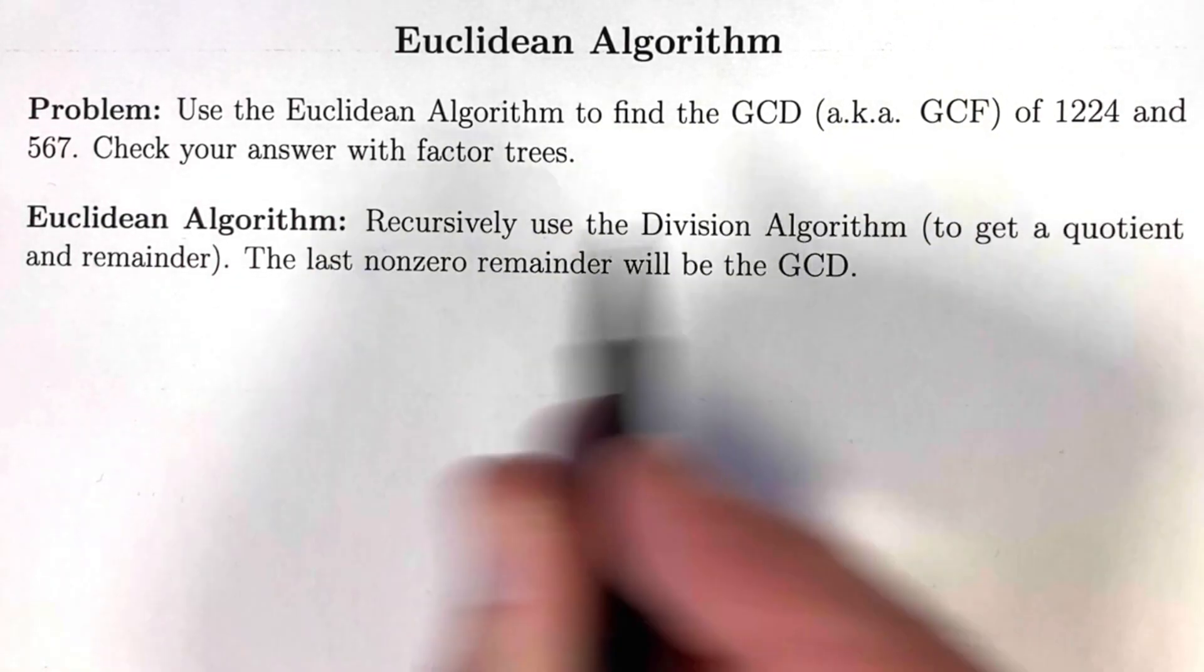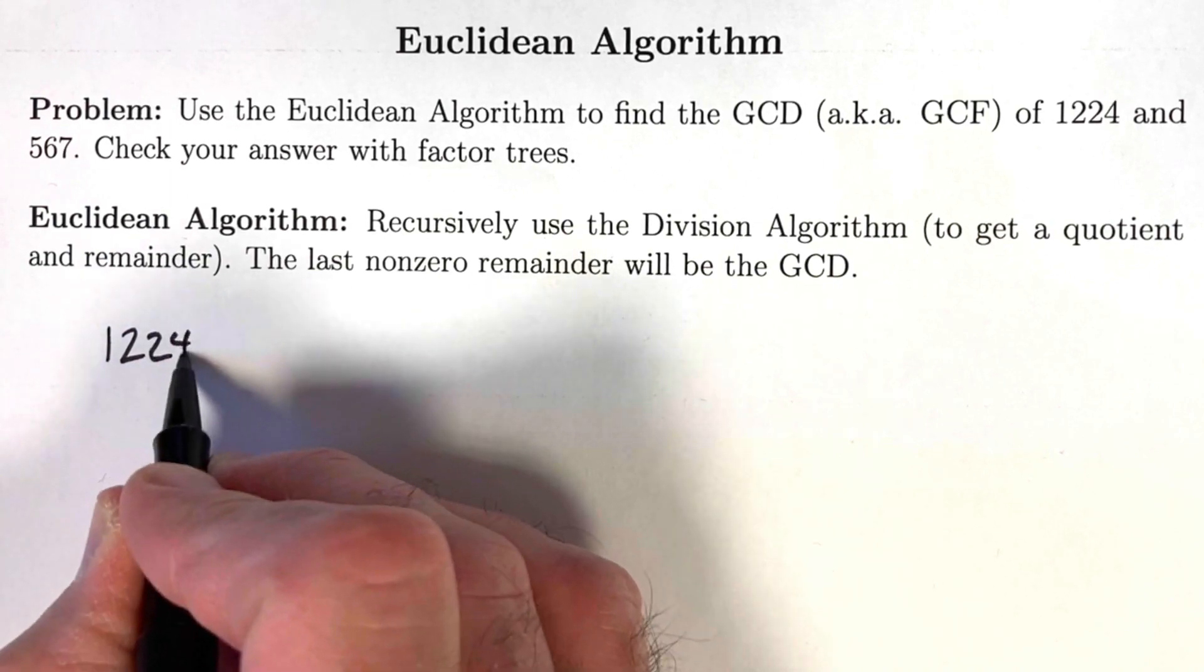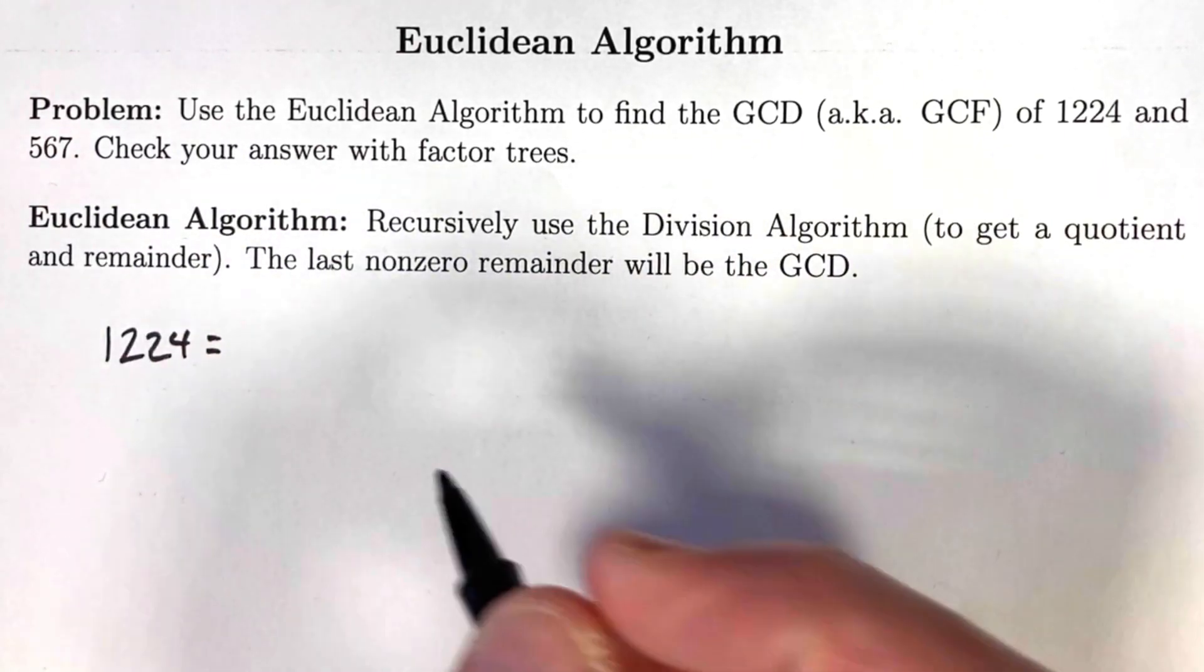So start by taking the bigger number, 1224, and dividing it by the smaller number, 567.